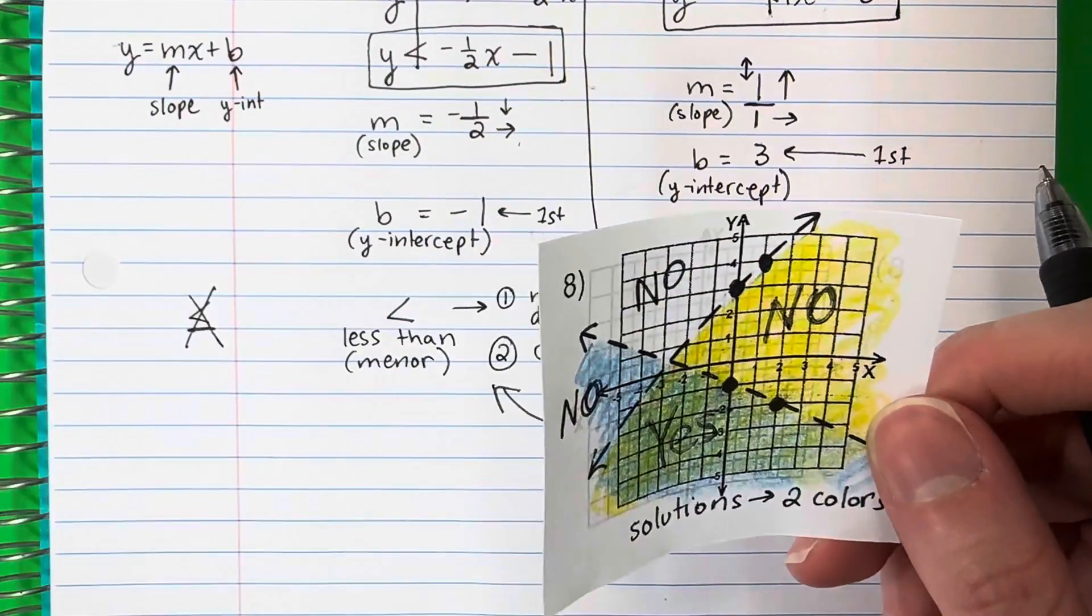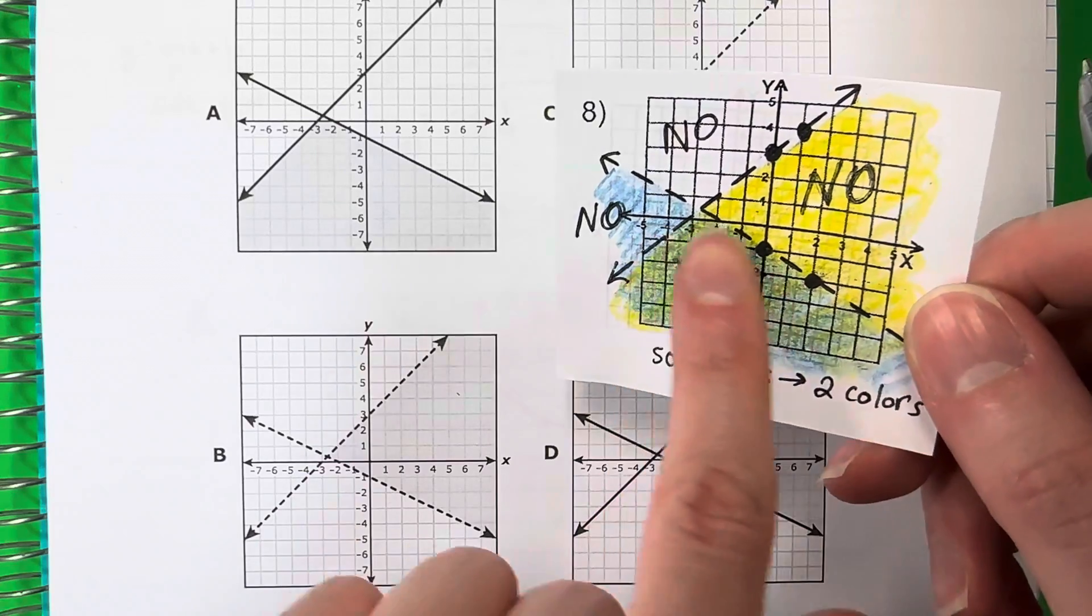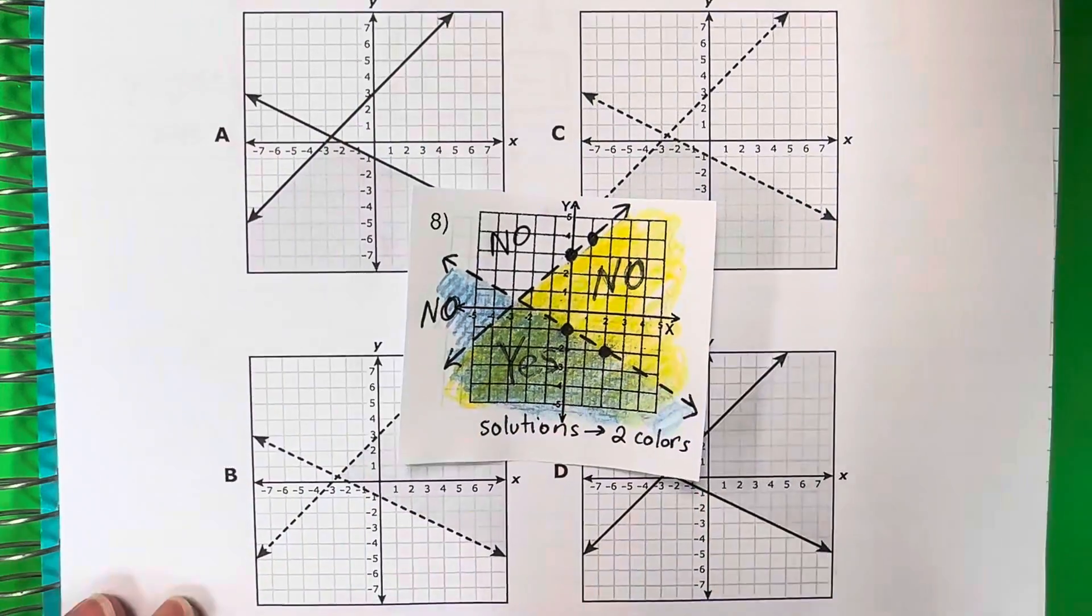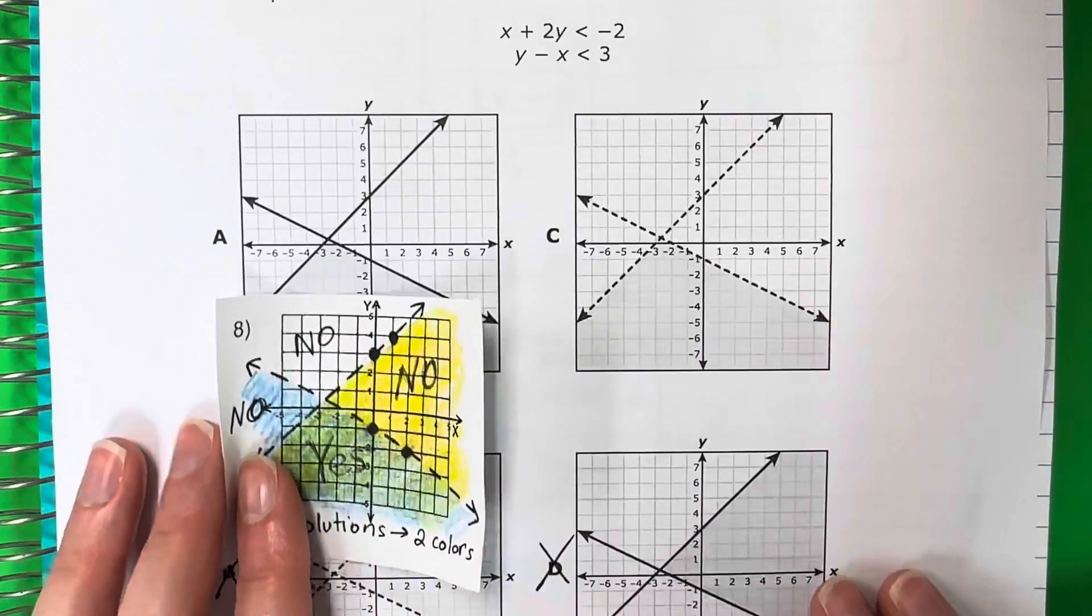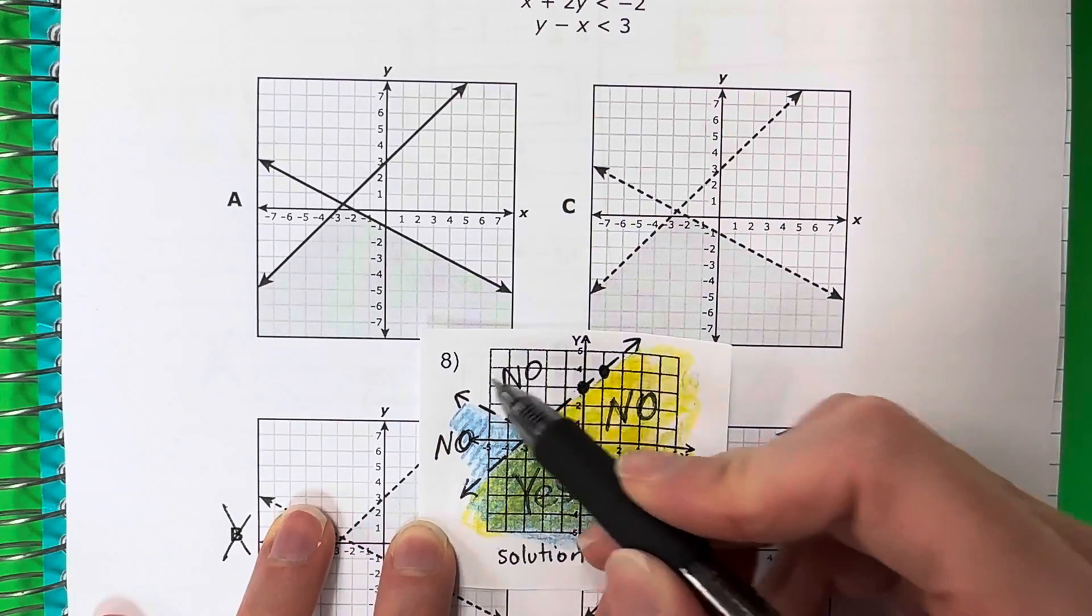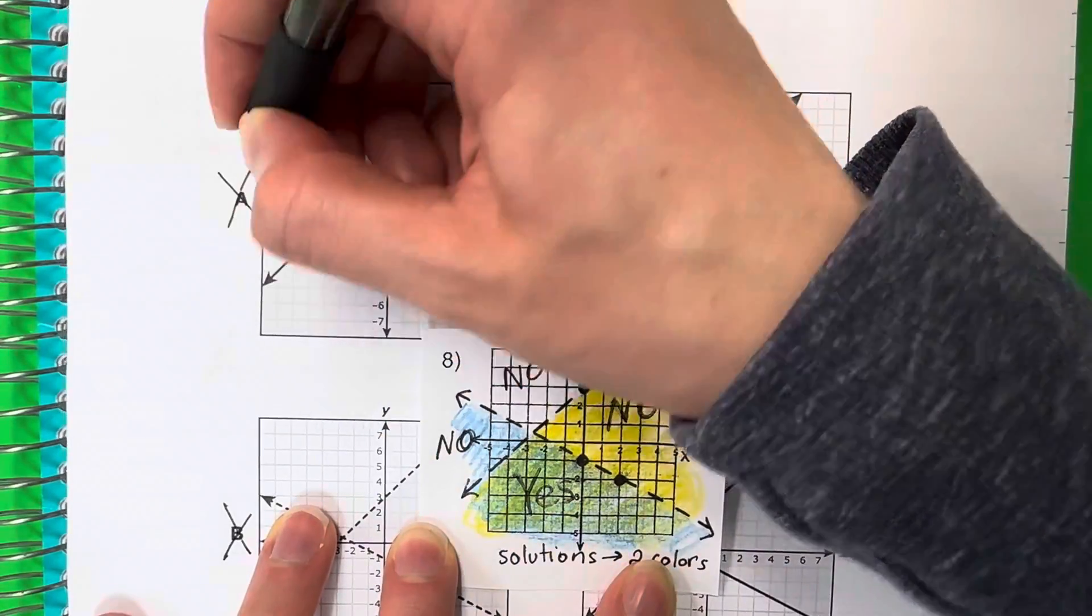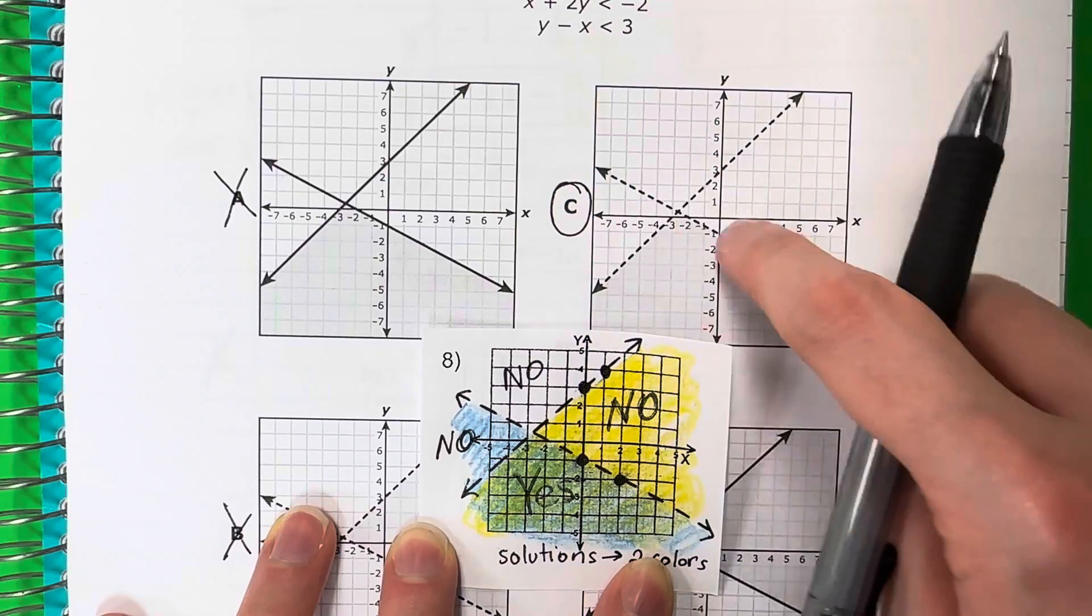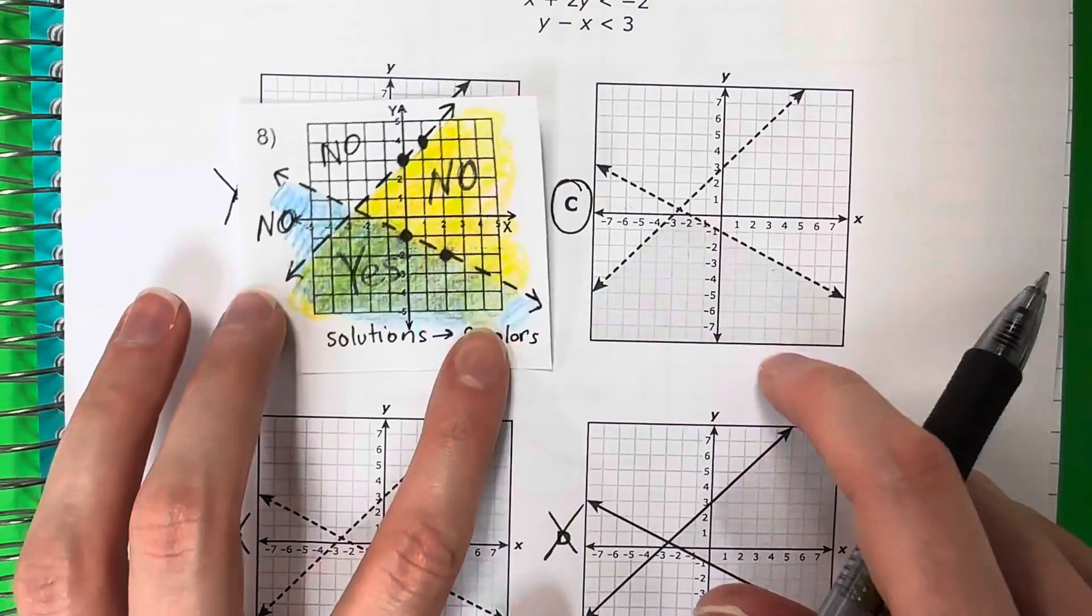So I'm going to look for a graph where the color is right over here, just in the down. Clearly this one no because it's on the right. This one no, also no, because it's on the right. Now I have two options, here and here. Look at the lines, they are both dashed. This is solid, so no. So this is my answer. This is my answer because the lines are dashed and the color is down. This is the graph right over here.